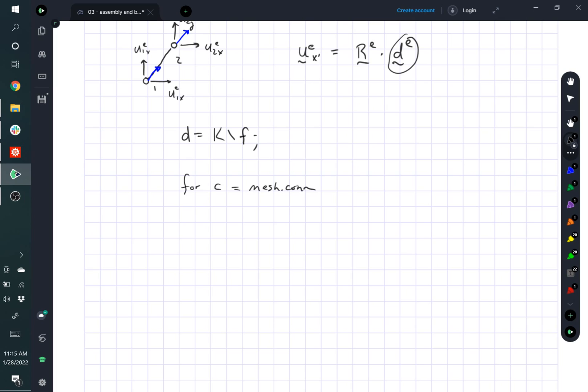We can just do another loop over our connectivity matrix. And then what we can do is we can gather the displacements of the node, right, of the element, I mean. And so the way to gather those displacements is we need to use the gather matrix or we need to use the concept of gathering.